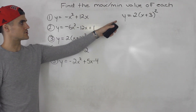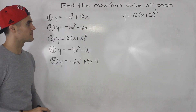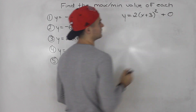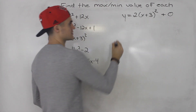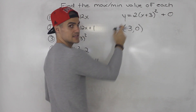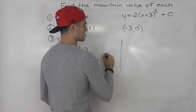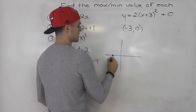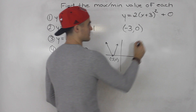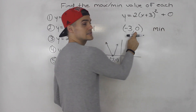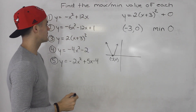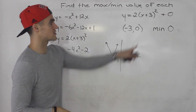Moving on to number three, we got y is equal to 2 times bracket x plus 3 squared. Notice this is already in vertex form — there's effectively a plus 0 outside. The vertex is negative 3 and 0. It's opening up because the a value is positive, so it has a min value of 0. We didn't have to complete the square; if you just see something like this, there's a plus 0 out here and this is the vertex.